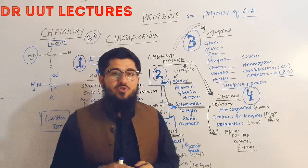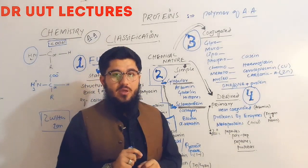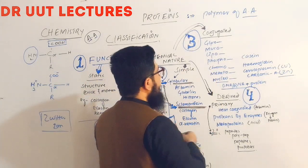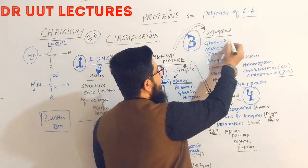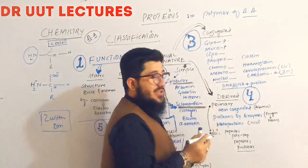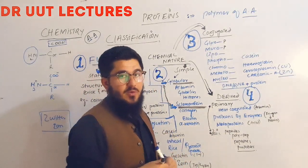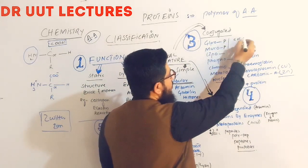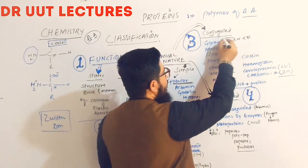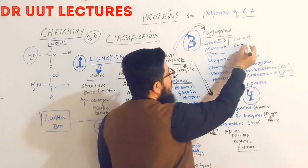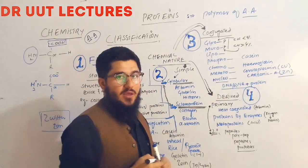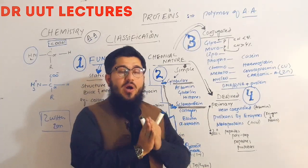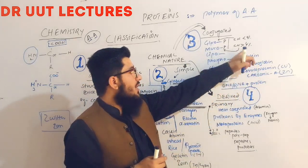The second group is conjugated proteins — proteins with something extra joined to them, called a prosthetic moiety. Glycoprotein is formed when a carbohydrate is attached to a protein. Mucoprotein is also carbohydrate attached to protein, but the difference is the percentage of carbohydrate: if carbohydrate attached is less than 4%, it is glycoprotein; if more than 4%, it is mucoprotein.